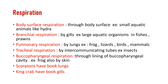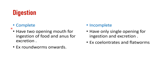Digestion is of two types: complete and incomplete. Complete digestion means two openings — mouth for ingestion and anus for excretion. From roundworms onwards, complete digestion is present. In incomplete digestion, only one opening serves both ingestion and excretion — examples are coelenterates and flatworms, like Hydra.